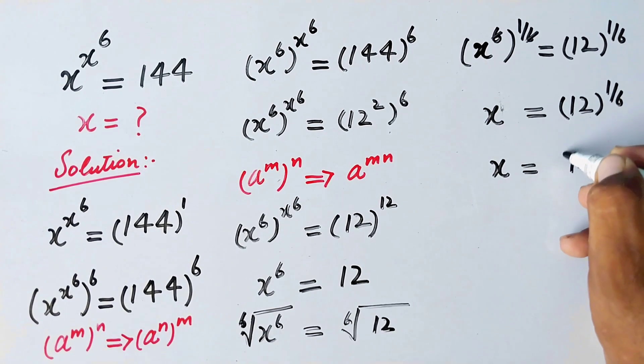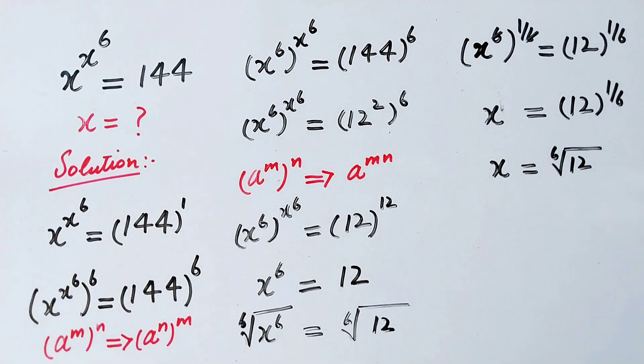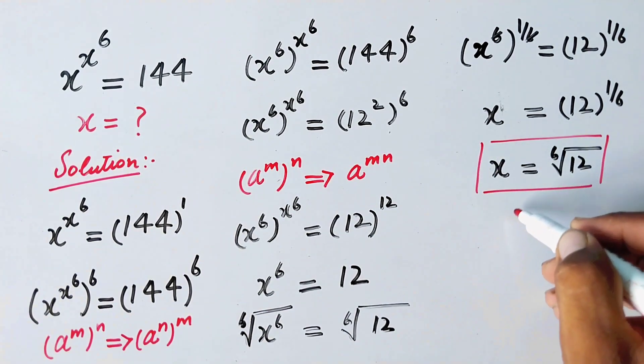Or we can write it again in this form: x equals the 6th root of 12, and that is our final answer. We have found the value of x.